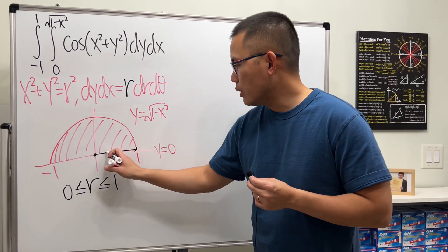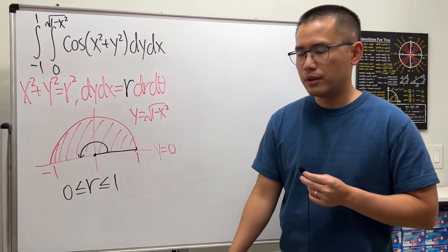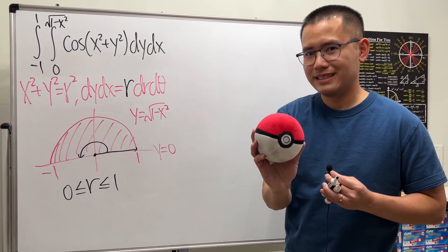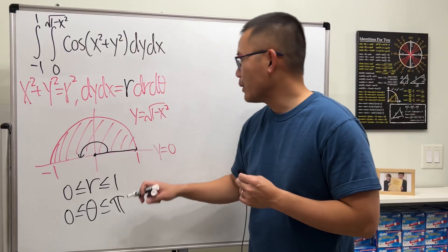Next we will have to rotate from here all the way to here, so that is from 0 to π. And now that looks like a pokeball. θ goes from 0 to π.